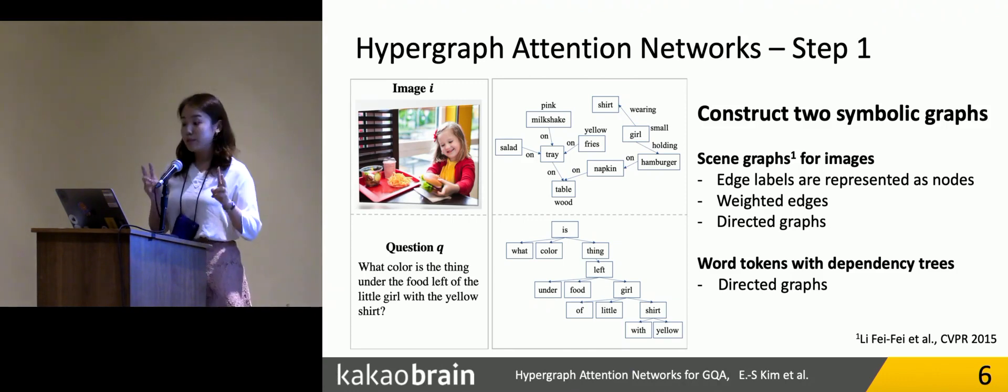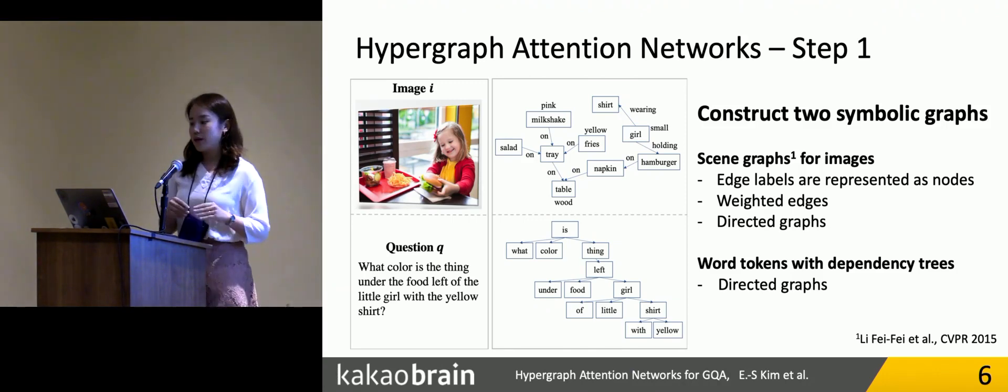After constructing two symbolic graphs, we have two symbolic graphs with two sets of nodes, and each adjacency matrix has just directed and weighted edge information.